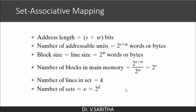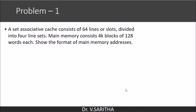Formulas help us identify the tag, set, and word fields in the main memory address. Let us consider a problem: a set associative cache memory consists of 64 lines divided into 4-line sets. Main memory consists of 4K blocks of 128 words each. We need to show the format of the main memory address — that is, identify the number of bits in the tag, set, and word fields.